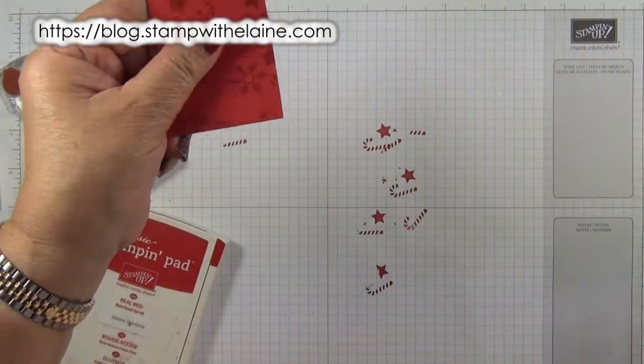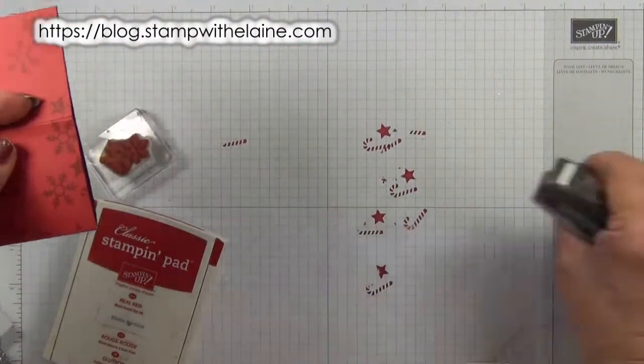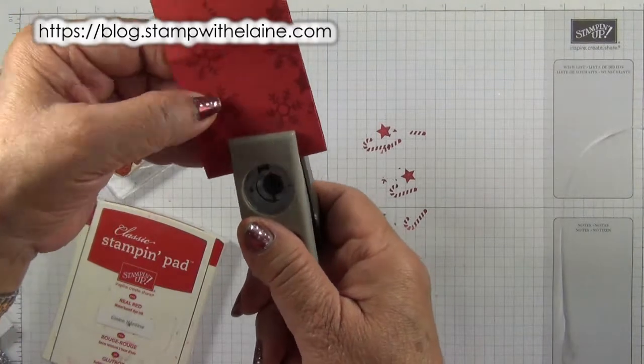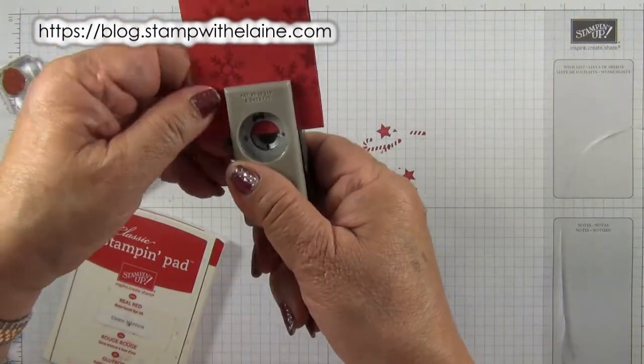Fold it in half and take a half inch circle punch and punch out half a semicircle on the fold. Center it into the cardstock.